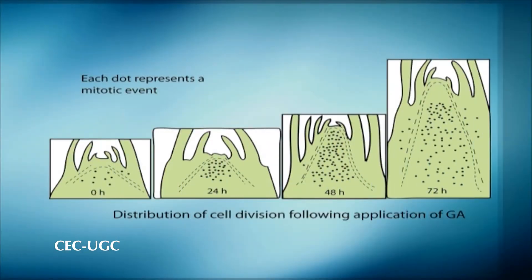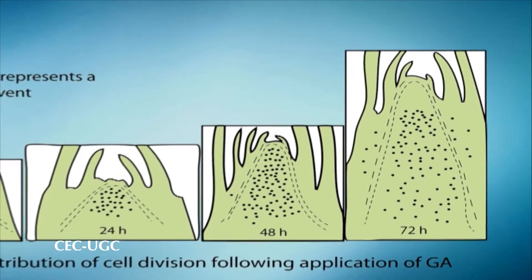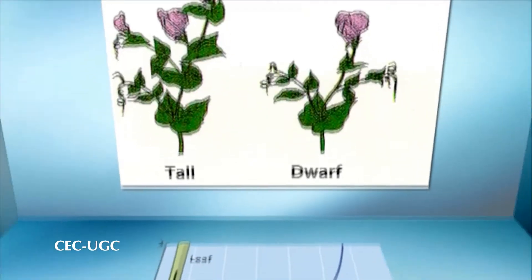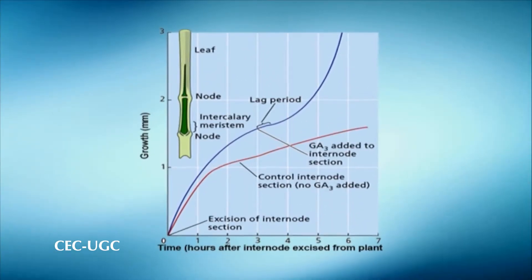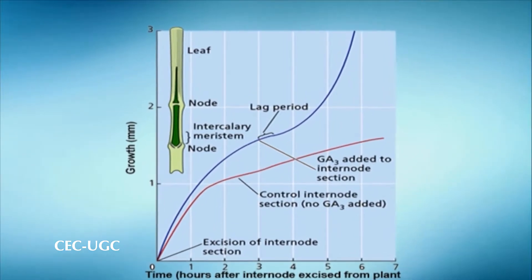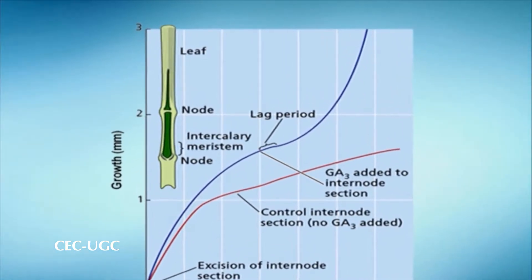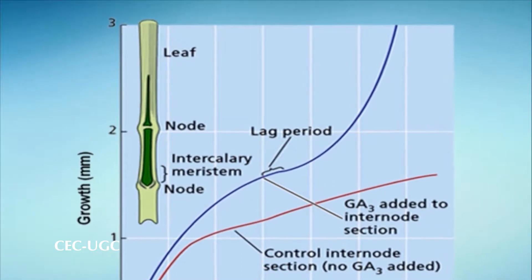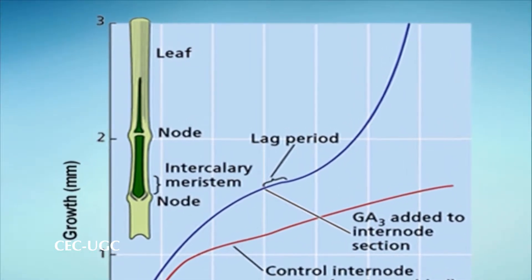Gibberellins increase both cell elongation and cell division in response to application of GA to dwarf peas. For example, internodes of tall peas have more cells than those of dwarf peas, and the cells are longer. Mitosis increases markedly in the subapical region of the meristem of rosette long-day plants after treatment with gibberellins. The dramatic stimulation of internode elongation in deep-water rice is due in part to increased cell division activity in the intercalary meristem. Moreover, only the cells of the intercalary meristem whose division is increased by GA also exhibit GA-stimulated cell elongation.